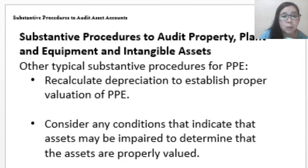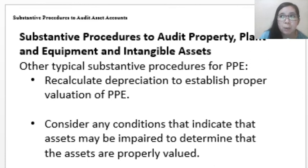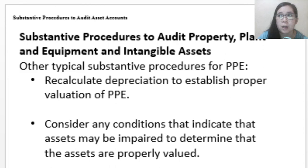The auditor can also recalculate depreciation to establish whether the entity has allocated the proper amount and whether the PPE was properly valued. Lastly, the auditor can consider any conditions that may indicate that assets are impaired, to determine that they are also properly valued. Obsolescence of PPE can be determined by examining what is existing in the industry in which the entity operates and other sources that direct the auditor's understanding of the condition of the property, plant, and equipment.